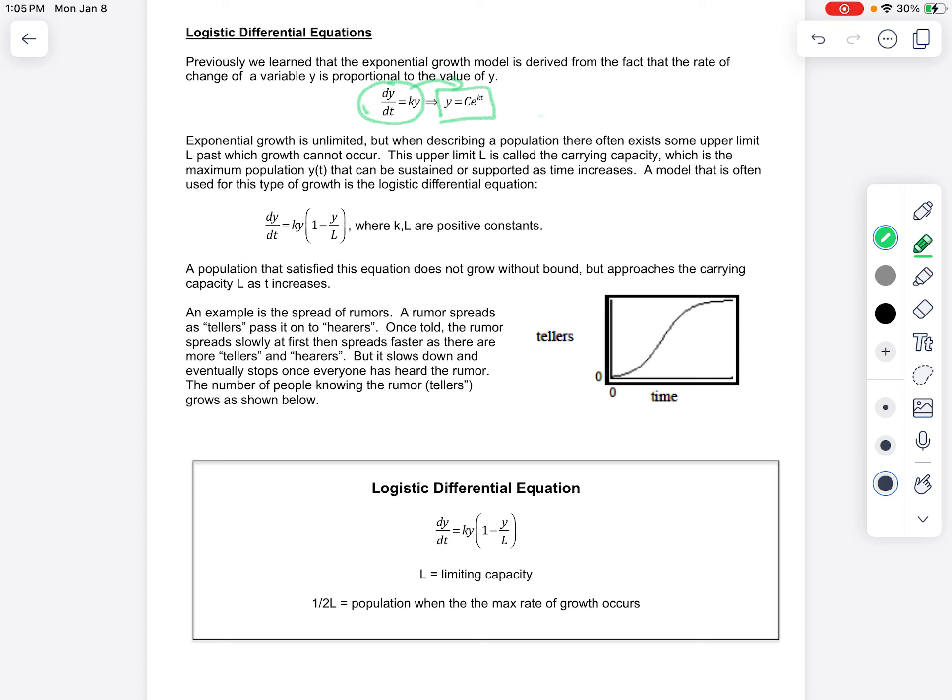This graph typically looks like this. This is your typical exponential growth graph. It starts out slow, but it grows very quickly, and it goes up forever.